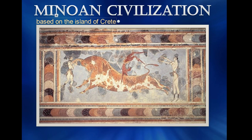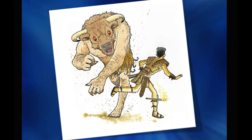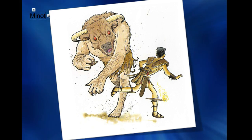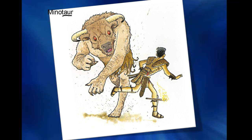We see bulls being very important to them. Another thing you probably already know about this civilization would be the tale of the Minotaur — this lovely half-bull, half-man creature. For those of you born under the astrological sign of Taurus, it's the bull constellation. You get that same idea here of the bull appearing with the Taurus. The civilization gets its name from King Minos.